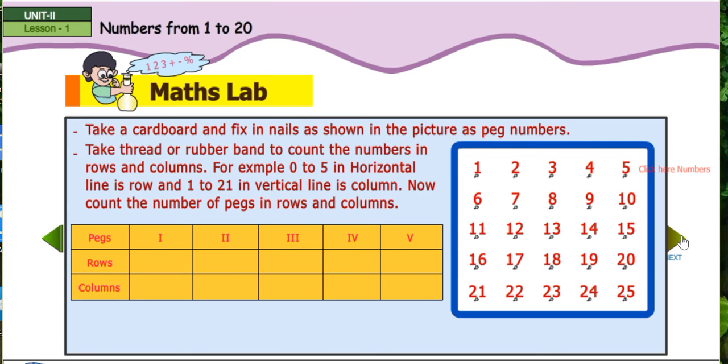Math Lab. Take a cardboard and fix your nails as shown in the picture as peg numbers. Take thread or rubber band to count the numbers in rows and columns. For example, zero to five in horizontal line is row and one to twenty-one in vertical line is column. Now, count the number of pegs in rows and columns.